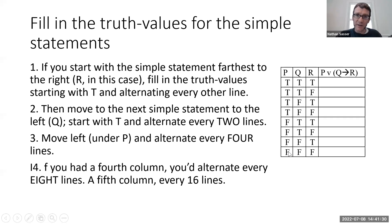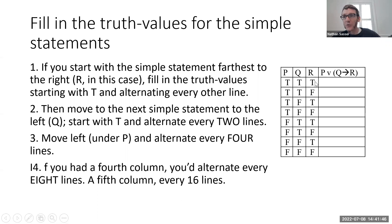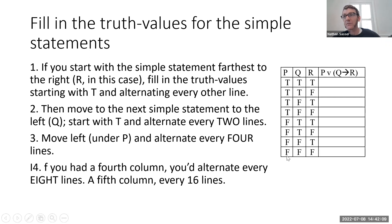Then fill in the truth values for the simple statements. Start with the simple statement column farthest to the right before the compound statement — in this case, R. Alternate true-false all the way down. Then go one column to the left, under Q, and do two trues and two falses, alternating: true-true, false-false, true-true, false-false. Then go to the next column to the left, P, and do four trues and then four falses. Keep following that pattern until you've filled out the truth values for all the simple statements.